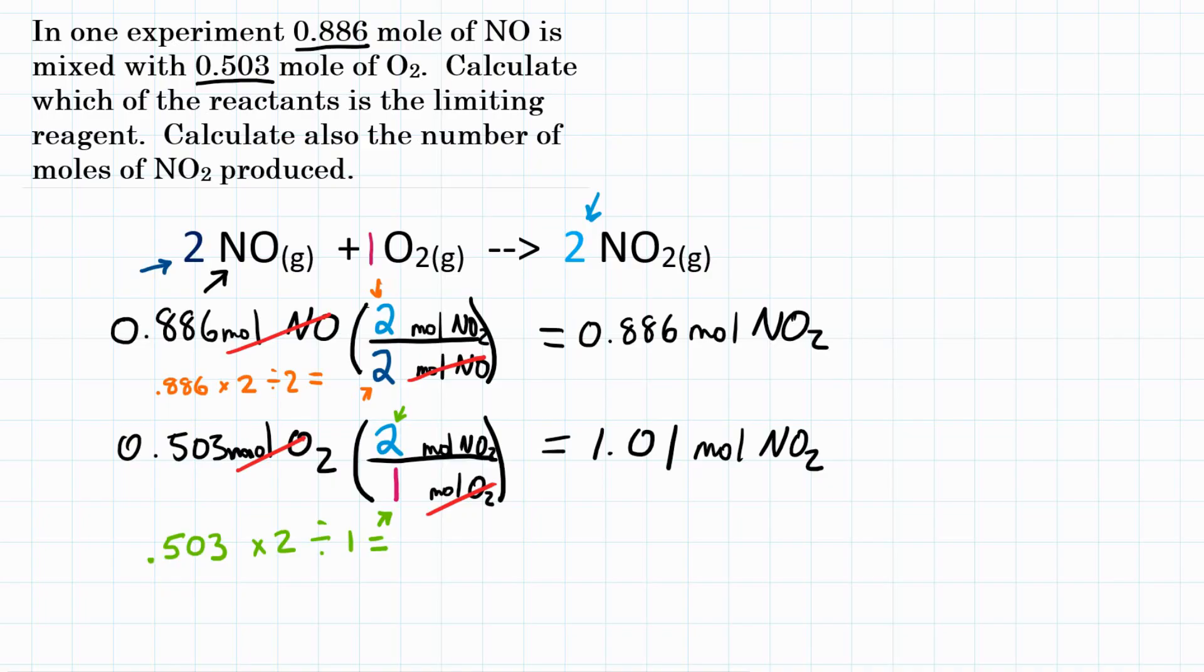Now we pick whichever one is less. That's what we're actually going to get, because once that amount has been produced, all of that reactant is gone, so there's no more reaction. So what's smaller, 0.886 or 1.01? Well, 0.886 is less than 1.01. So we get 0.886 moles of NO2. That's what we would actually produce.